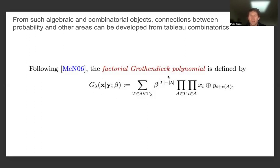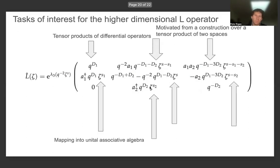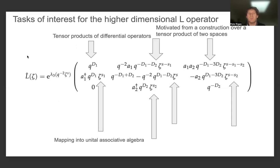We also have again the direct sum of two terms involved in the expression for the Grothendieck polynomial where lambda is some integer partition, and the fact that we have a beta term raised to the power of the size of the set-valued tableau of shape lambda. Returning more to the quantum inverse scattering approach side for the higher-dimensional L operator, we had described this L operator across several presentations and drawn connections between the two-dimensional case and the three-dimensional case, as well as connections from the Drinfeld automorphism action on this L operator to obtain a family of L operators.